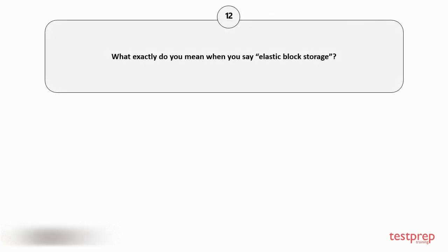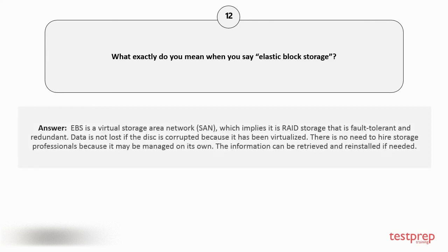Question number 12: What exactly do you mean by elastic block storage? EBS is a virtual storage area network, which implies it is RAID storage that is fault tolerant and redundant. Data is not lost if the disk is corrupted because it has been virtualized. There is no need to hire storage professionals because it may be managed on its own. The information can be retrieved and reinstalled if needed.